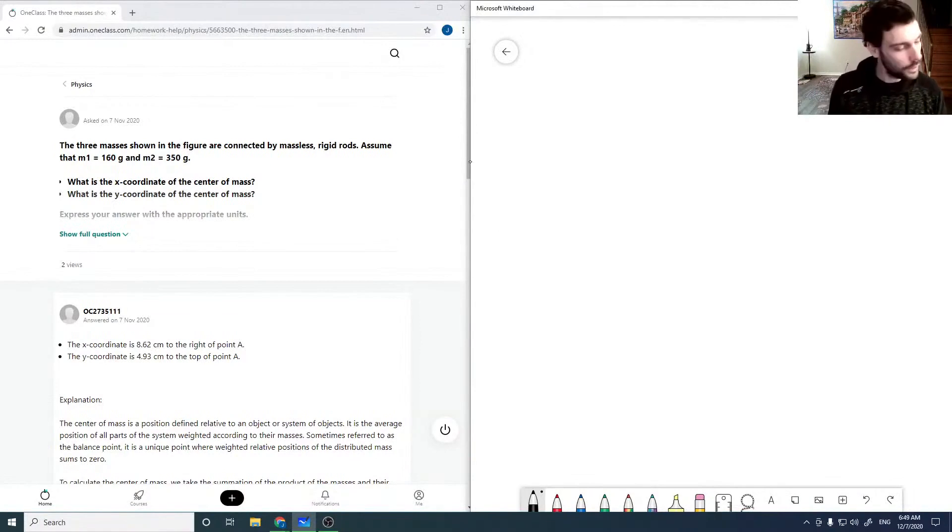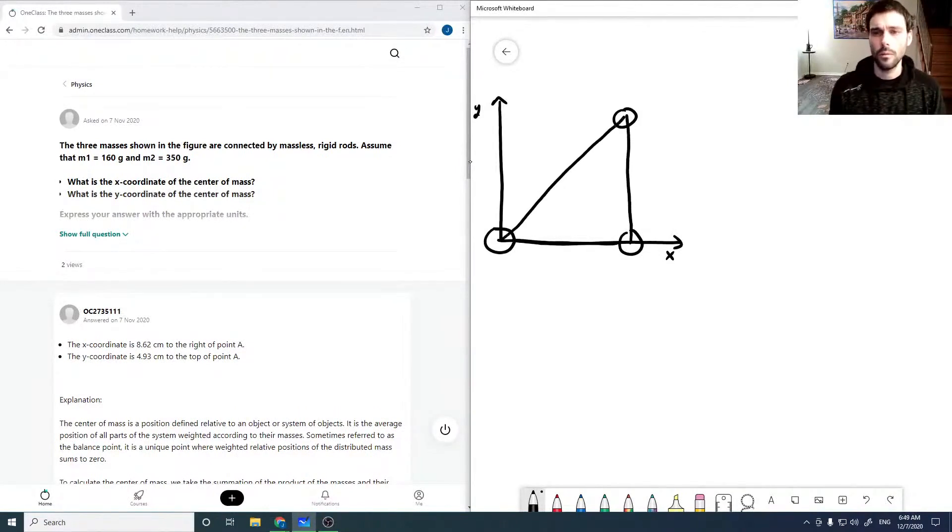Okay, here we've got three masses aligned as I'm going to draw them here. We're given an axis system, and they're all connected. The assumption is that the rods are massless and we've got a 200 gram mass here.